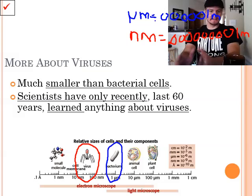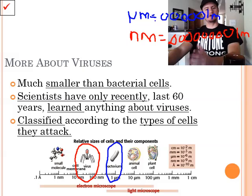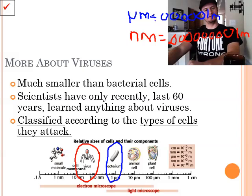Scientists have only recently, and when I say recently, we're talking in the last 60 years, learned anything about viruses. Before that, we had no idea what was going on. And they classified them according to what type of cells they attack. Whether they attacked blood cells, bacteria cells, skin cells, whatever they attacked, that's what they classified them by.